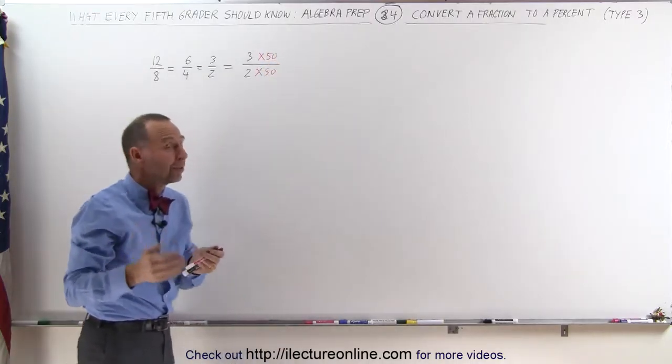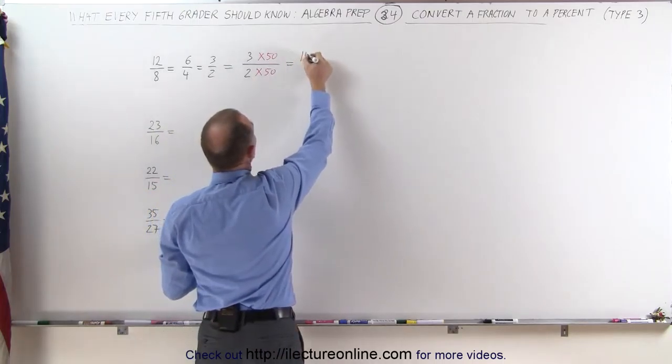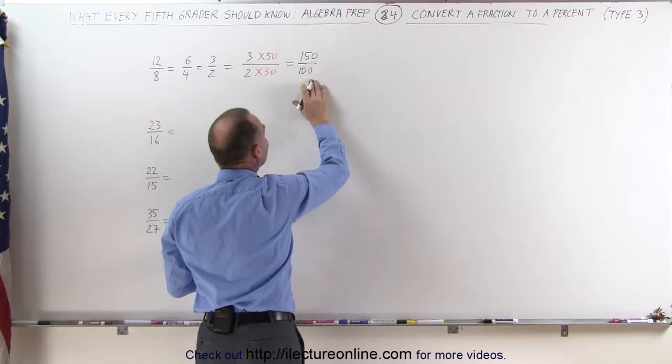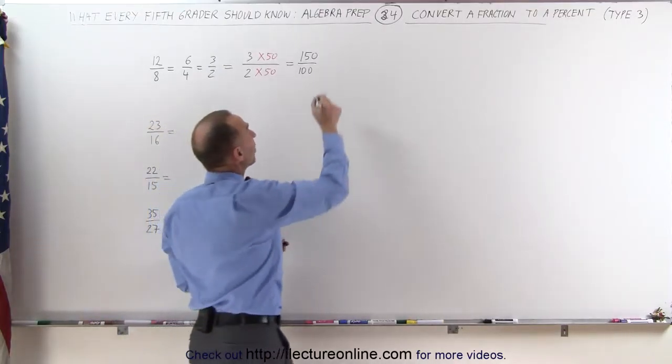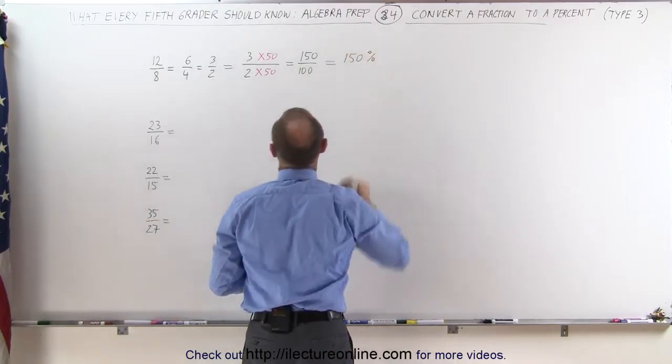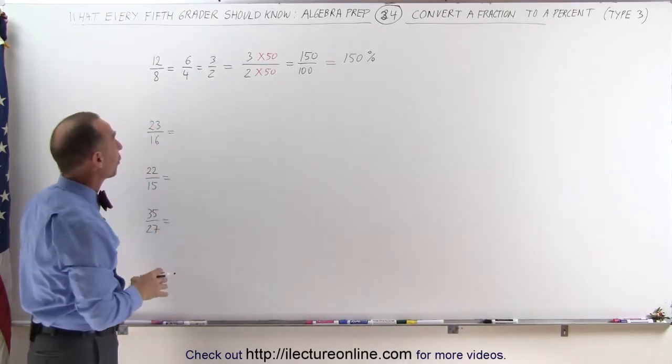Of course, we have to do the same thing with the denominator as a numerator. And this becomes 150 divided by 100. And again, the rule is that any fraction that has 100 as a denominator, we simply take the numerator and put a percent sign behind it. This then is 150%. 12 divided by 8, which can be written as 6 over 4 or 3 over 2, is 150%.